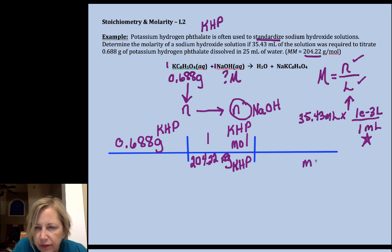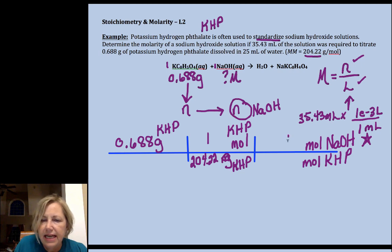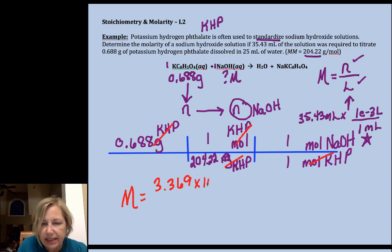Then I want to get rid of moles of KHP and I want moles of sodium hydroxide. And that happens to be a one-to-one mole ratio, which is really nice about titrations. Check to make sure your units cancel, and we are left with moles of NaOH. If you calculated that, you would get 3.3 times 10 to the minus 3 moles.